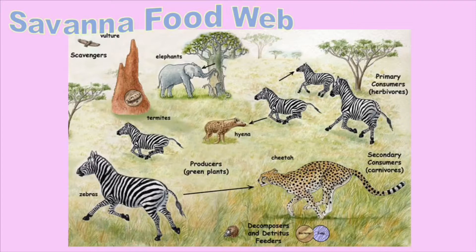The consumers that eat these trees and plants are elephants, zebras, and gazelles. Secondary consumers include cheetahs and hyenas. There are not many tertiary consumers except the vultures that eat the dead animals.